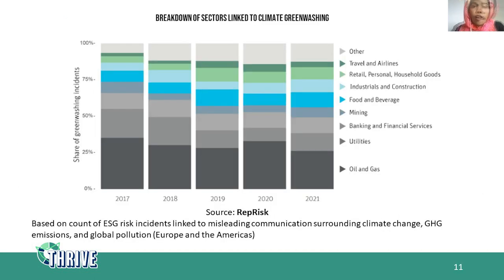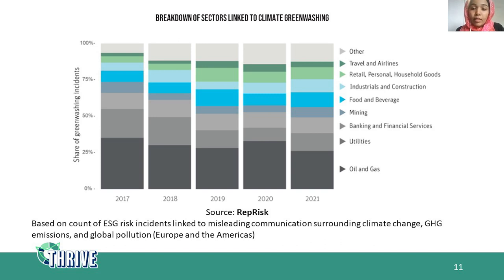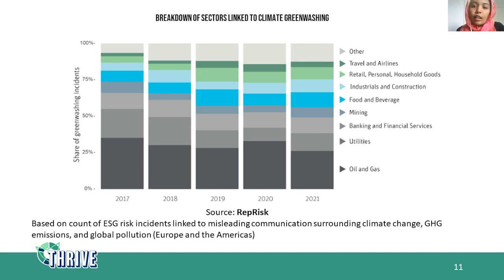Now we have some figures based on the count of ESG risk in Europe and the Americas. They show how industries have issues related to climate greenwashing. We can find that oil and gas companies most often make wrong claims, trying to make consumers believe they are supporting renewable energy while they actually support fossil fuels. Banking and financial services, industrials and construction, and food and beverage all have some greenwashing incidents, but the most cases are in oil and gas — and we will discuss an example from this industry.